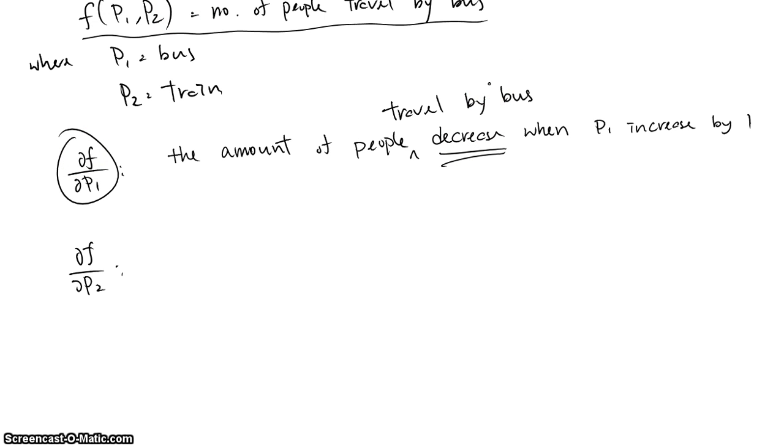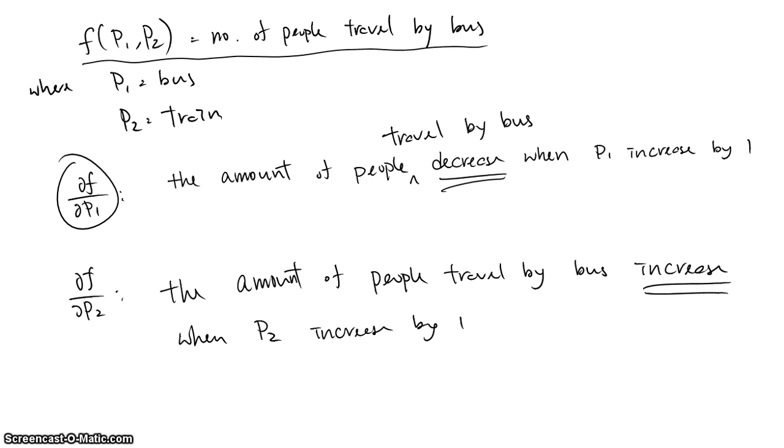By the same theory, ∂f/∂P2 should be the amount of people traveling by bus that increases when P2 increases by one. When the train ticket price increases, people switch from train to bus, so f(P1, P2) increases.